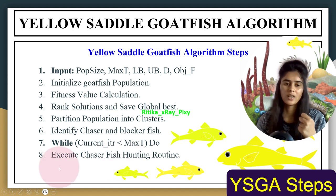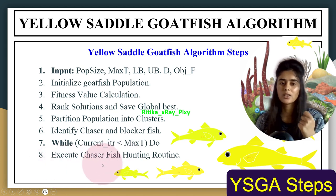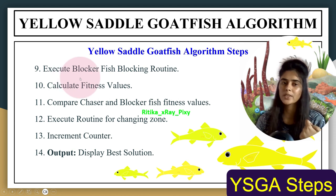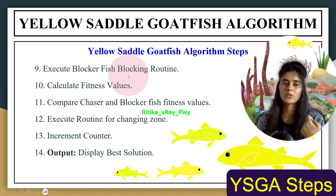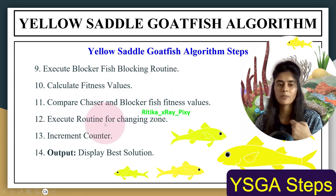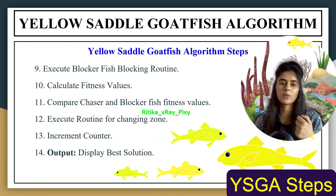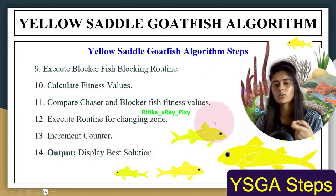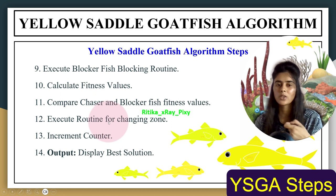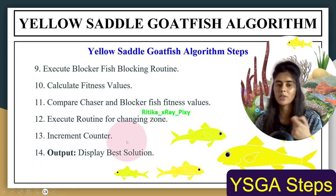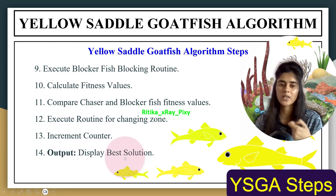The main loop then executes: Step 8 — execute the chaser fish hunting routine; then the blocker fish blocking routine; calculate fitness values for new solutions; compare fitness values of chaser and blocker fishes; execute the routine for changing zone (when one area is completely exploited, they move to a new area); increment the counter; if the stopping condition is met, stop and display the best solution, otherwise repeat the loop.